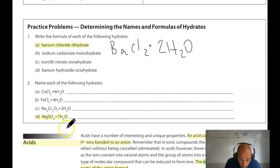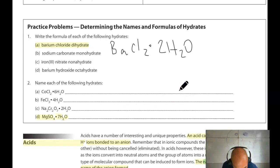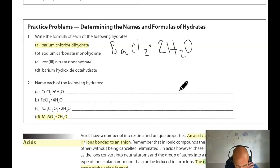Going from the formula to the name for practice 2D: MgSO4·7H2O. Mg stands for magnesium, SO4 stands for sulfate, and the dot 7H2O means seven water molecules — so the prefix is 'hepta.' The name is magnesium sulfate heptahydrate.